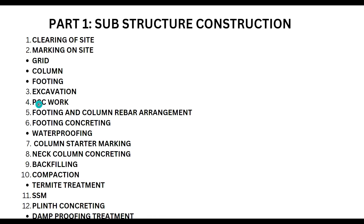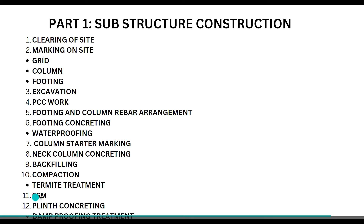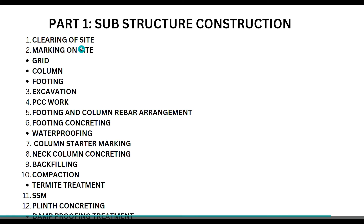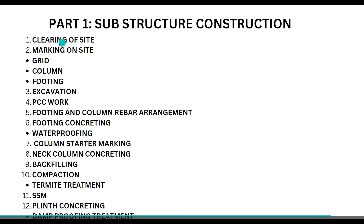Once the excavation is done you will do your PCC work. After PCC is done, you mark your column again on top of the PCC. Then you place your footing mesh and column cage, and after they are placed you do your concreting. Then you mark your column again on top of the footing to erect your column neck columns. Once all of that is done, you do backfilling and compaction, then place your SSM size stone masonry, and then go for plinth concreting. These are approximately the 12 steps for substructure construction, and I will show you each one on site.